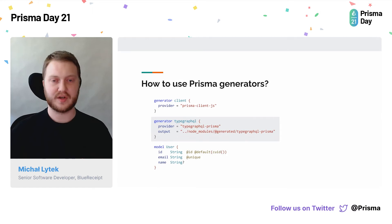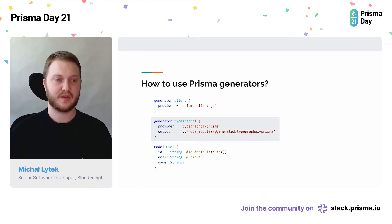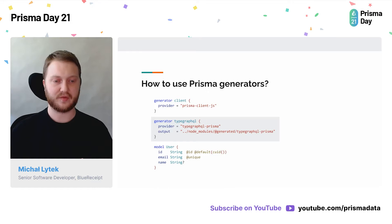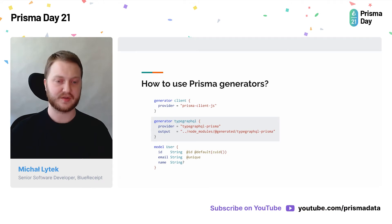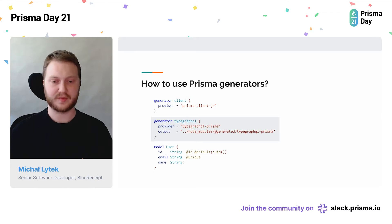If it's a Prisma generator, how do we actually use it? The generator we commonly use is the Prisma Client JS generator, described using a generator block. With the same syntax we can describe the generator for TypeGraphQL-Prisma by providing the name under the provider key. We also have control of the output — by default it targets node_modules and generates transpiled JS files, but we can also point to our src folder so it emits TypeScript source files.